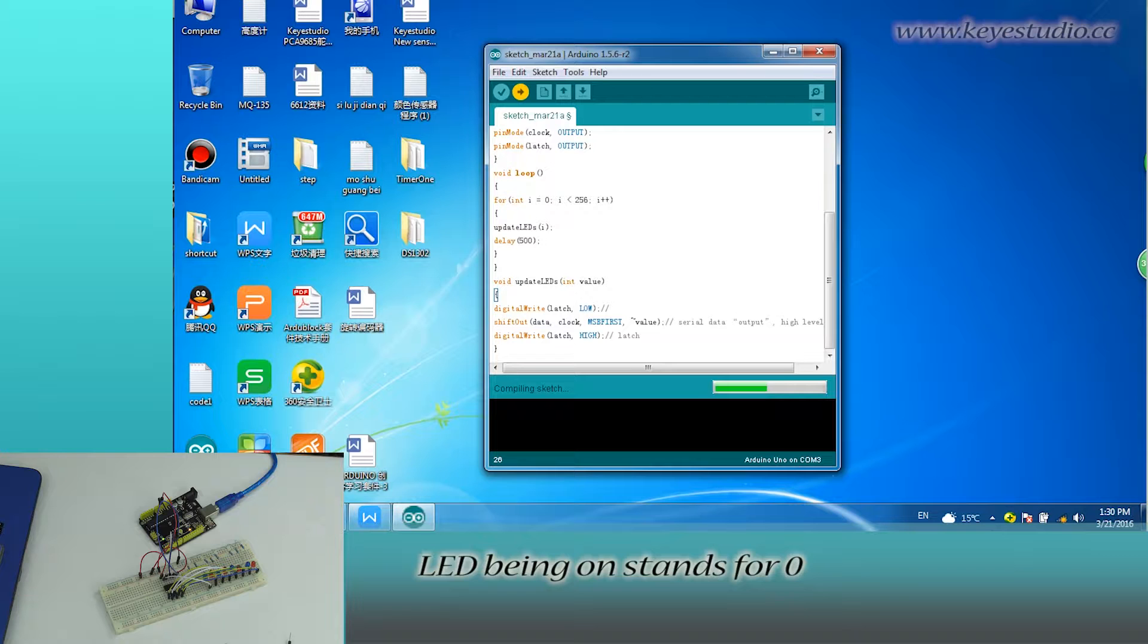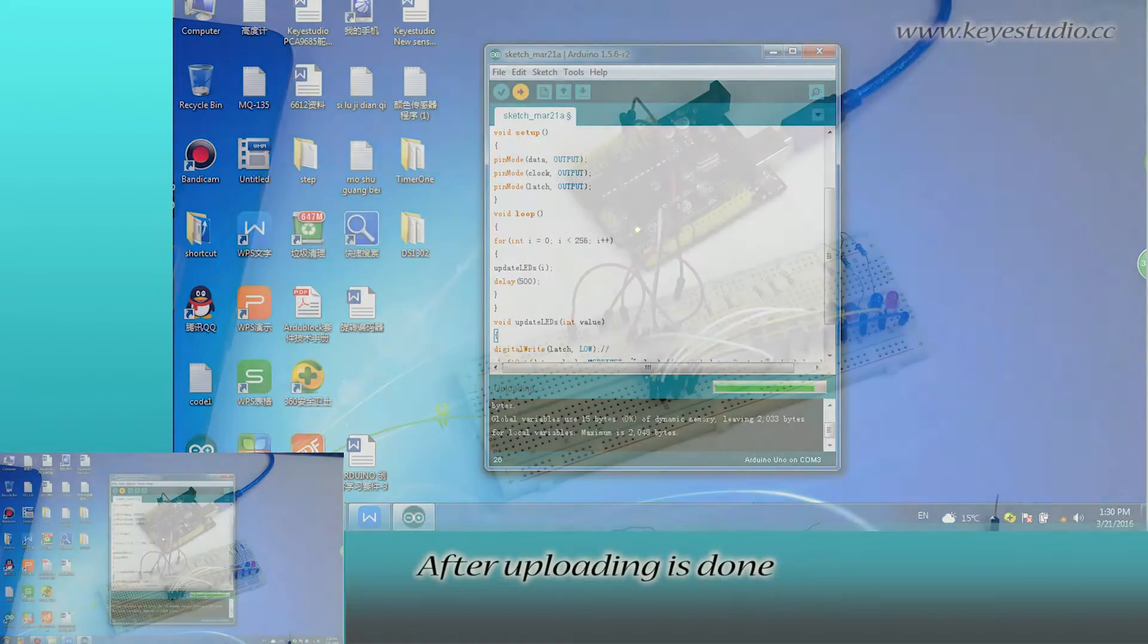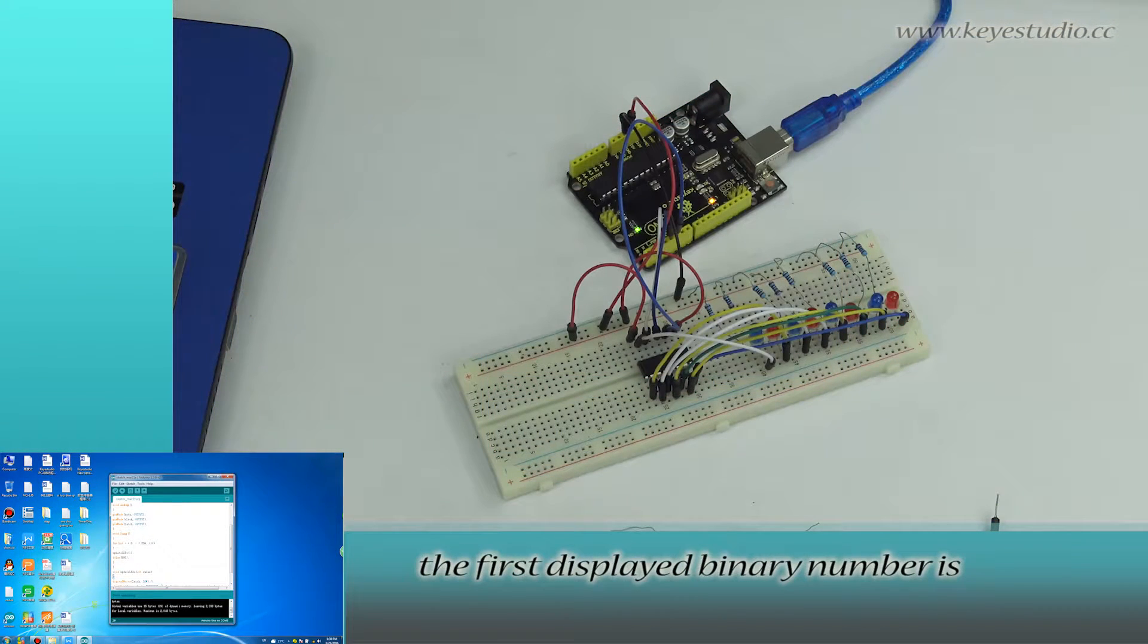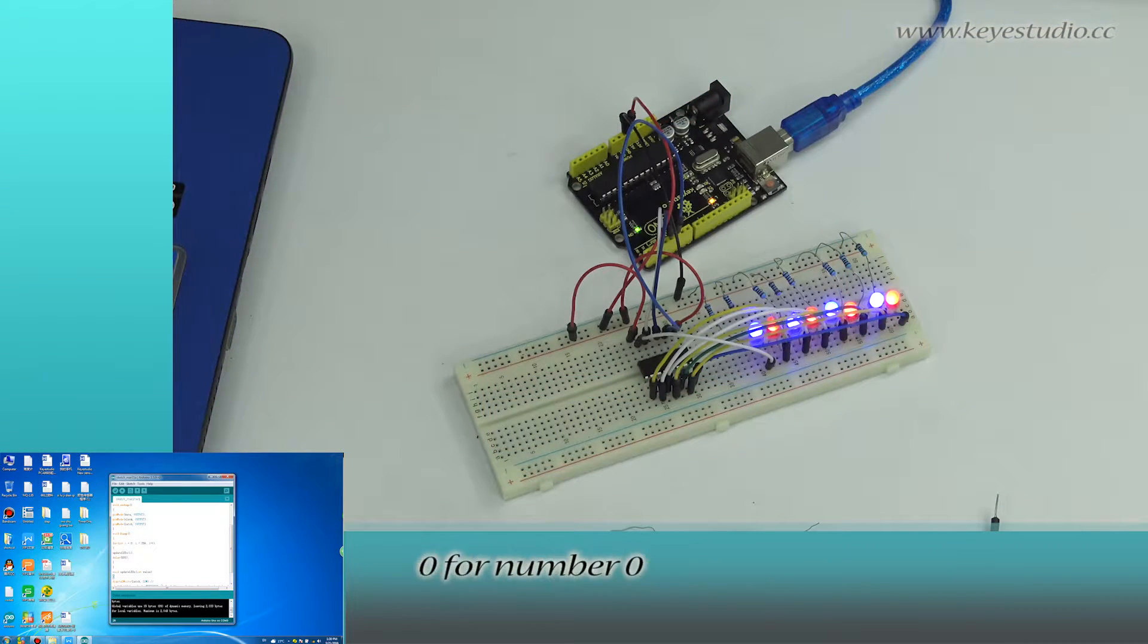Here, LED being on stands for 0. Being off stands for 1. After uploading is done, the first displayed binary number is 0 for number 0. That is, all 8 LEDs being on. So you get 8 zeros.